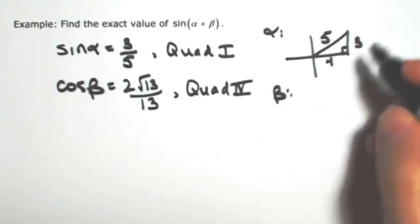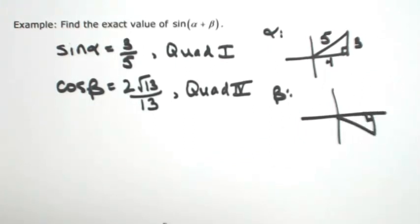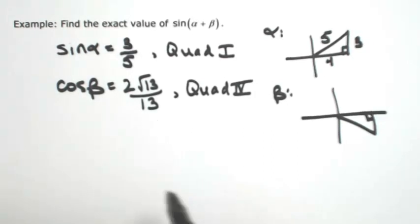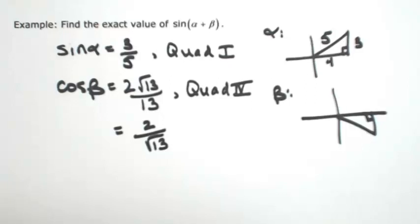For beta, I'm going to draw a triangle in the fourth quadrant whose cosine is 2 root 13 over 13. Now if you un-rationalize this, computations might be a little bit easier, so I'm going to do it that way.